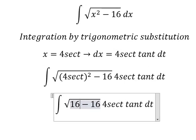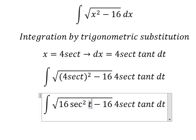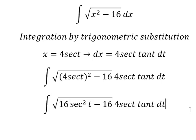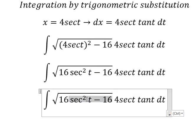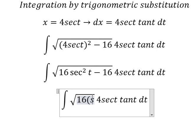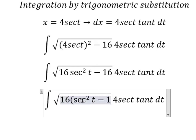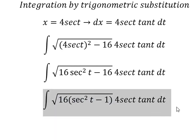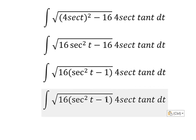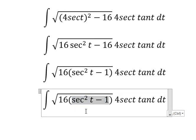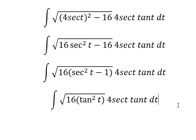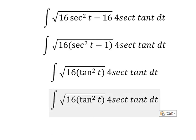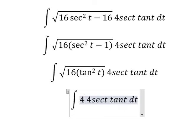So we have 16 sec²(t). We can do factorization with number 16. Using the trigonometric identity, we get tan²(t). So the square root of 16 tan²(t) gives us 4 tan(t).